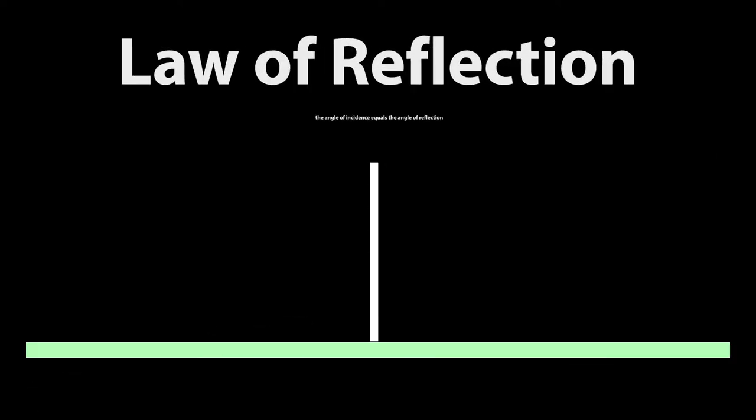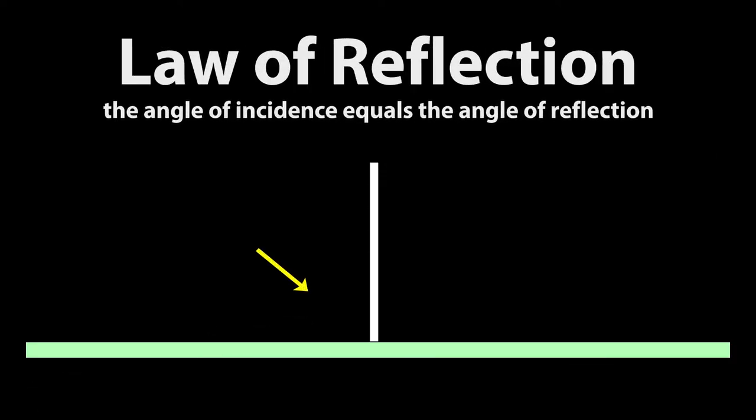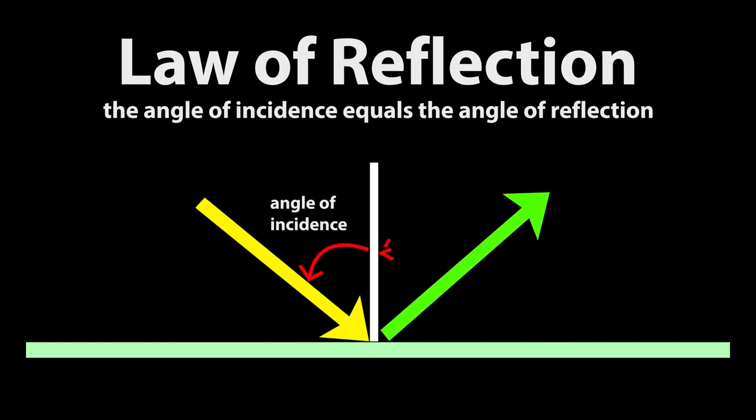Say that arrow hits a boundary. It would reflect. We call this phenomenon reflection. And it's governed by the law of reflection, which says the angle of incidence, measured from this vertical line called the normal, equals the angle of reflection.